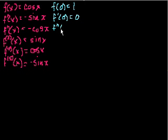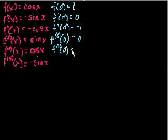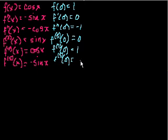f prime prime of 0: cosine of 0 we already know is 1, but we have a negative sign here, so it becomes minus 1. The third derivative at x is equal to 0: sine of 0 is 0, so this is 0. I think you might start to see a pattern emerging. The fourth derivative at 0: cosine of 0 is equal to 1. And then the fifth derivative is just 0 again.